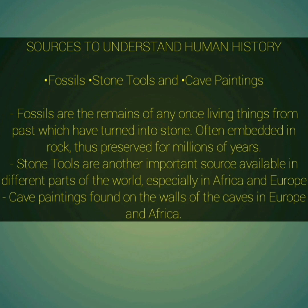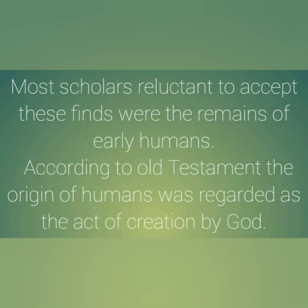Another important source is stone tools, which were made and used by early humans and are available in various parts of the world, especially in Africa and Europe. Paintings are another important source to understand early human history. Paintings found on the walls of caves in Europe and Africa are helping us understand early human history.